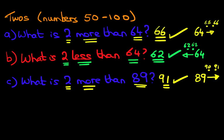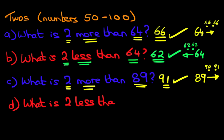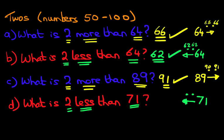Now let's look at one final question. What is 2 less than 71? We start with: what number are we looking at? We are looking at number 71. Are we going to count forwards or backwards? We are going to count backwards because it's less than. And how much are we going to count backwards? It tells us in the question — it's 2. So we do 1, 2, and we are now ready to count back from number 71.